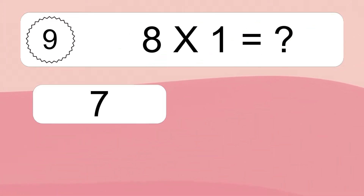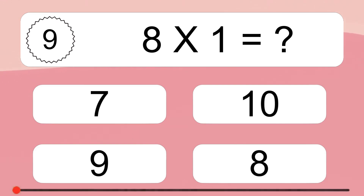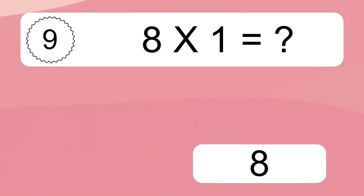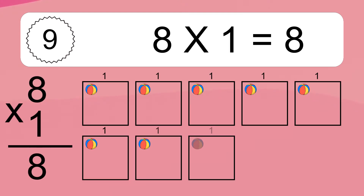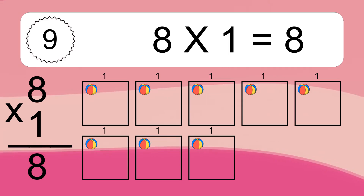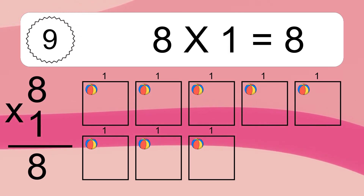8 times 1 equals what? 8 times 1 equals 8. We have 8 boxes, and each box has 1 colorful ball inside. If you count all the balls in all the boxes together, you will have 8 times 1 balls. This equals 8 balls.